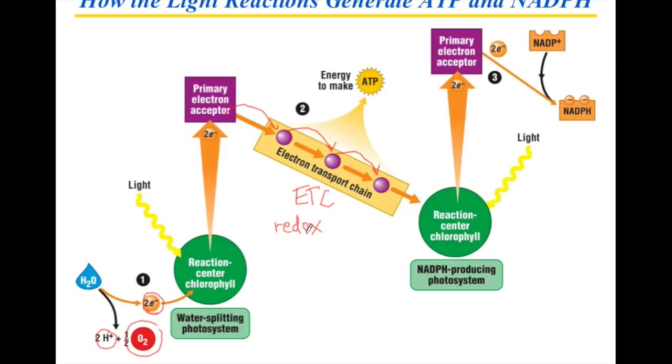Now you recognize some of these terms, don't you? Electron transport chain, there it is, redox reaction. Electron acceptors. And, of course, we can do the same thing. As the electron falls down the energy hill, we can pick up a little bit of energy to make ATP.